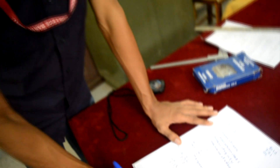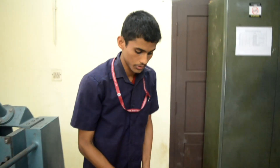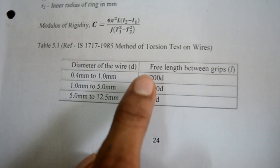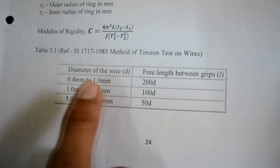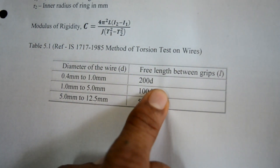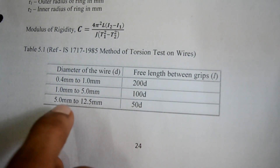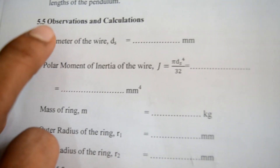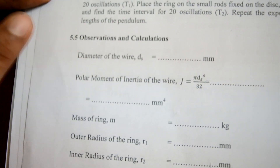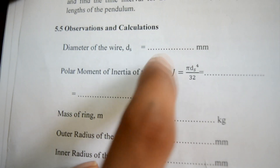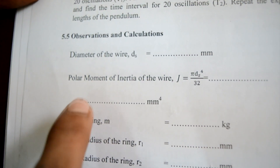The experiment is done for 3 values of wire length and the average value of C is noted in Newton per millimetre squared. This table gives an idea about the free length between the grips for different diameters of wire. For 0.5 mm to 1 mm diameter, the free length is 200 times the diameter. For 5 mm to 12.5 mm diameter, the free length is 50 times D. This is the observation and calculation table for the torsion pendulum experiment. Here the diameter of the wire ds is noted in mm, measured by a micrometer screw gauge.